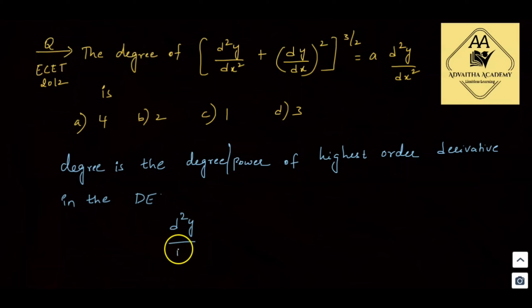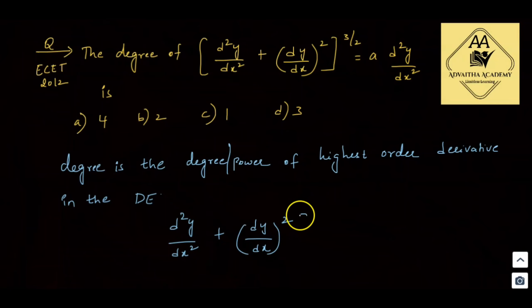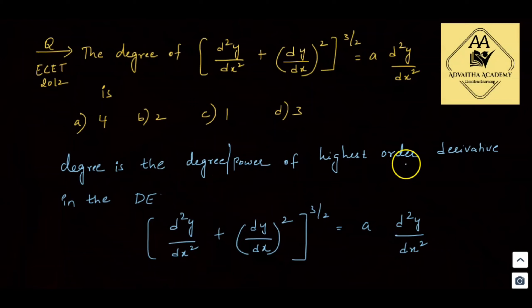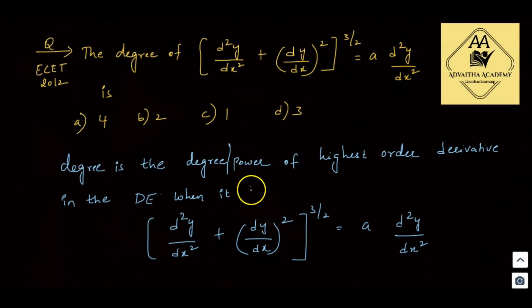The equation is: [d²y/dx² + (dy/dx)²]^(3/2) = a · d²y/dx². The degree is the power of the highest order derivative in the differential equation when it is free from radicals.